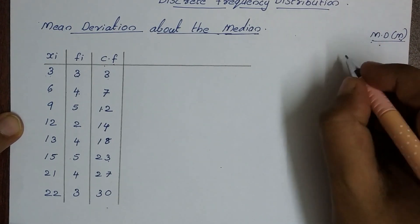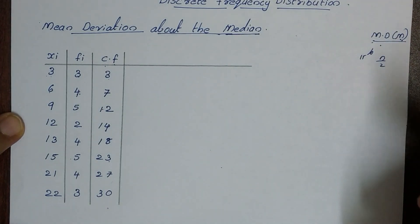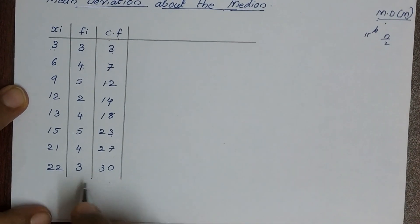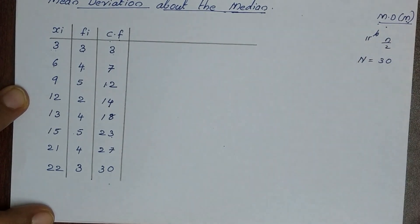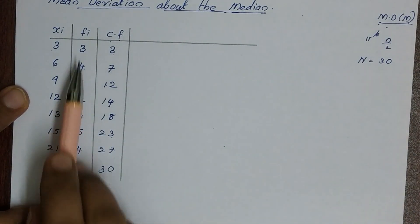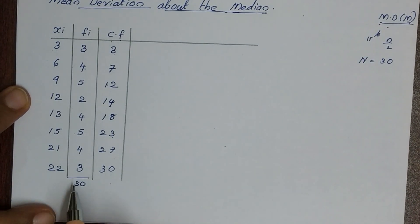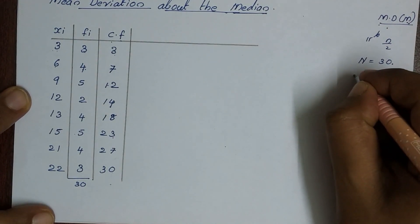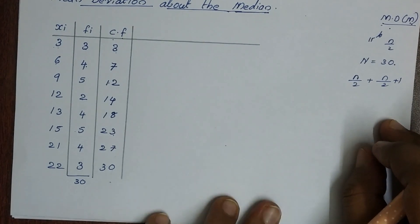Median observation — that is the n/2-th observation. We add the cumulative frequency to get the total. The total is 30, so capital N is equal to 30. Therefore, we need the n/2-th observation plus the (n/2 + 1)-th observation to find the median.